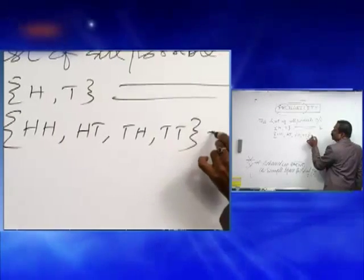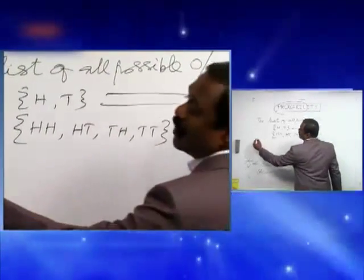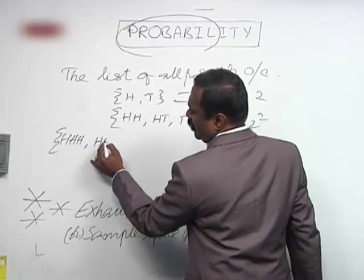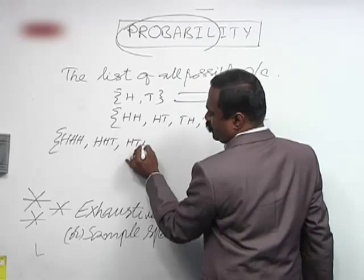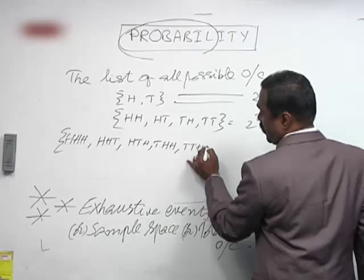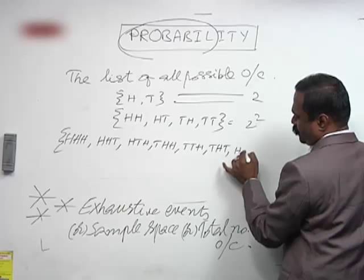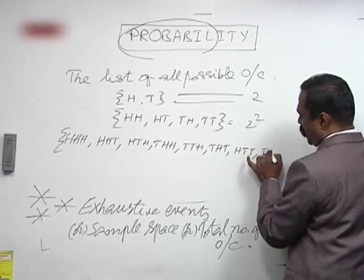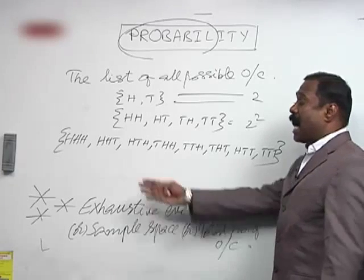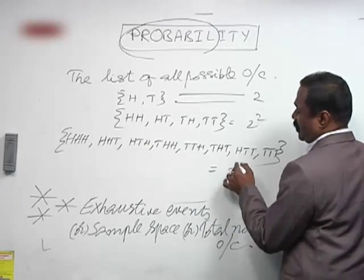That gives us 4 outcomes, which is 2 squared. If I throw the coin three times, the outcomes are HHH, HHT, HTH, THH, TTH, THT, HTT, and all tails — TTT. So how many outcomes do we have here? That is 4 plus 4, which is 8. It is nothing but 2 cubed.